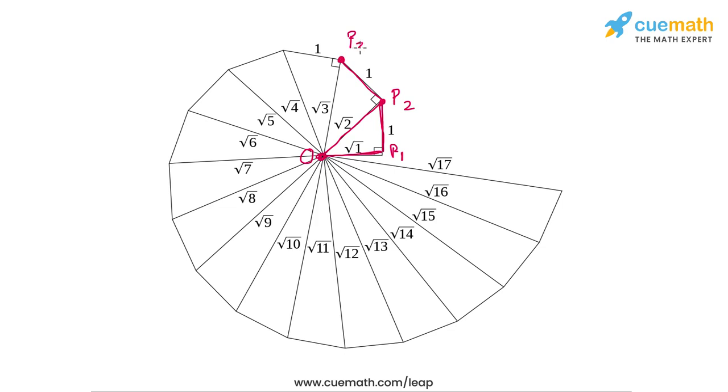Next here's P2P3 perpendicular to OP2, so this point is P3. By the Pythagoras theorem OP3 has a length of root 3 units. Then here's P3P4, which is again of length 1 unit. So OP4 has a length that's the square root of OP3 squared plus P3P4 squared, or the square root of 4, which is 2. So OP4 is root 4 or 2 units.